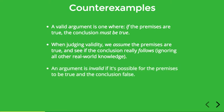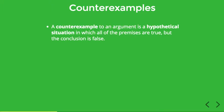This means that an argument is invalid if it's possible for the premises to be true and the conclusion false. So if we can even imagine a scenario in which the premises are true and the conclusion is false, the argument can't be valid. That gives us one way to show that an argument is not valid. A counter example to an argument is a hypothetical situation in which all the premises are true and the conclusion is false.